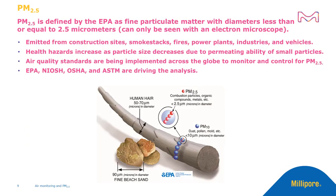So how small are PM2.5 particulates? PM2.5 is defined by the EPA as fine particulate matter with diameters less than or equal to 2.5 micrometers, which can only be seen with an electron microscope. PM2.5 is emitted from construction sites, smokestacks, fires, power plants, industries, and vehicles.